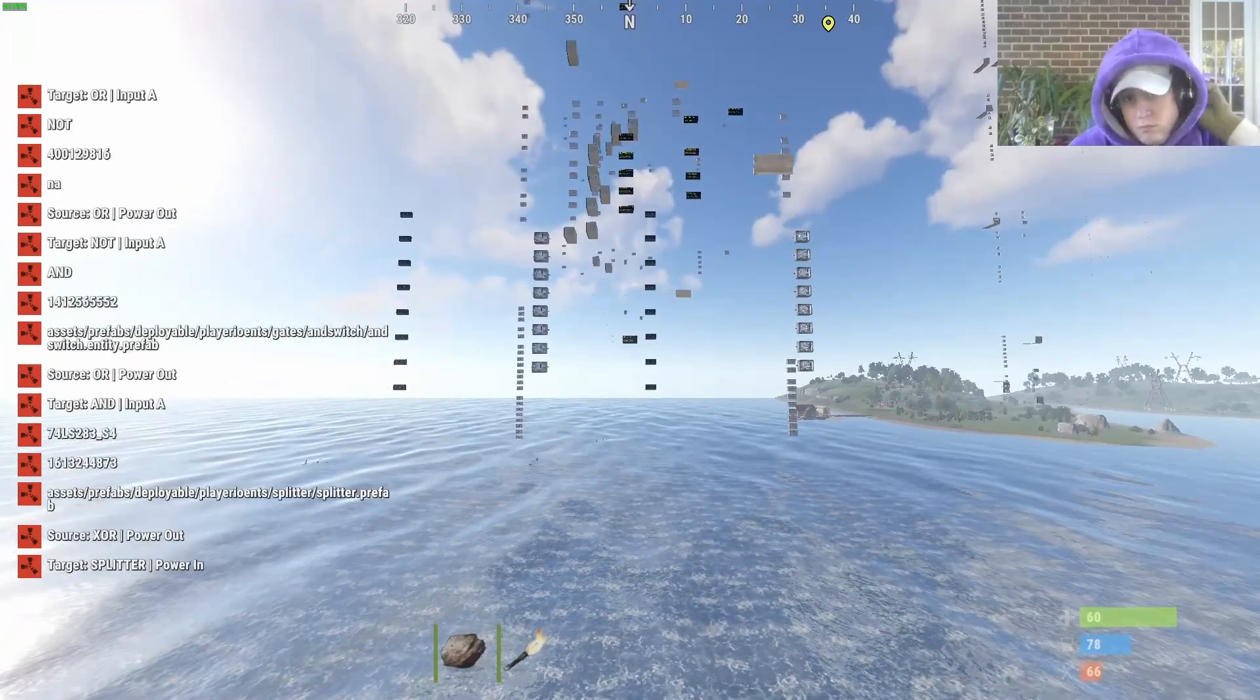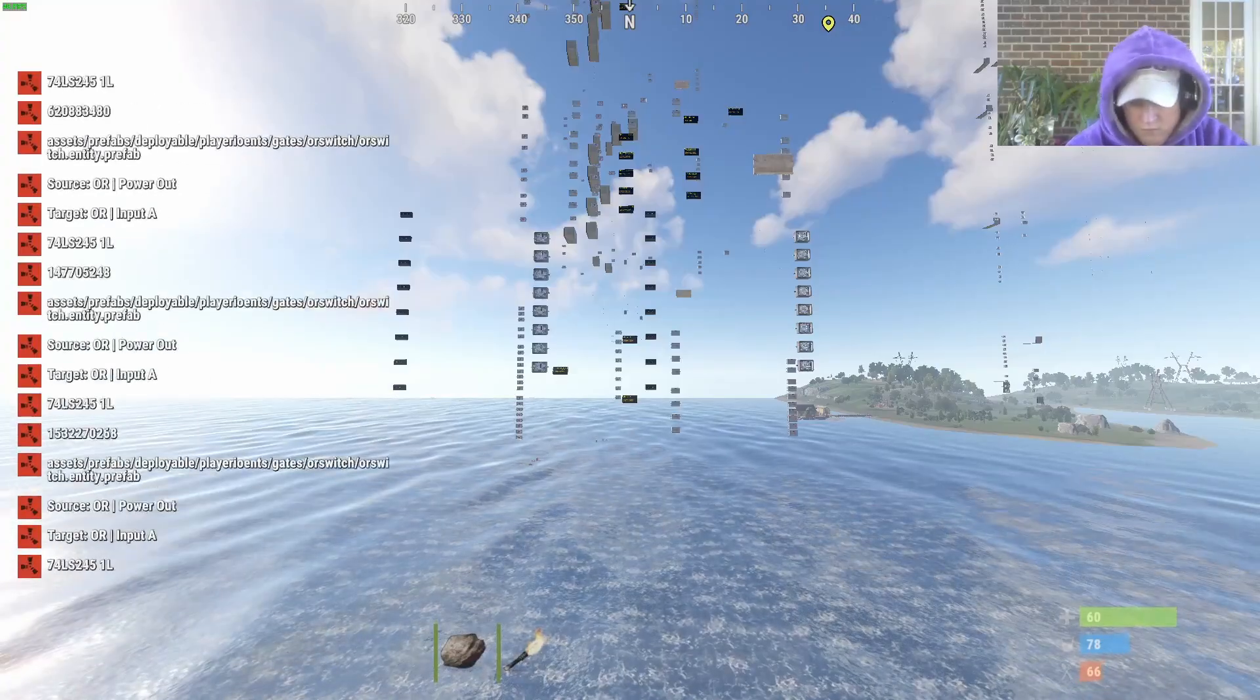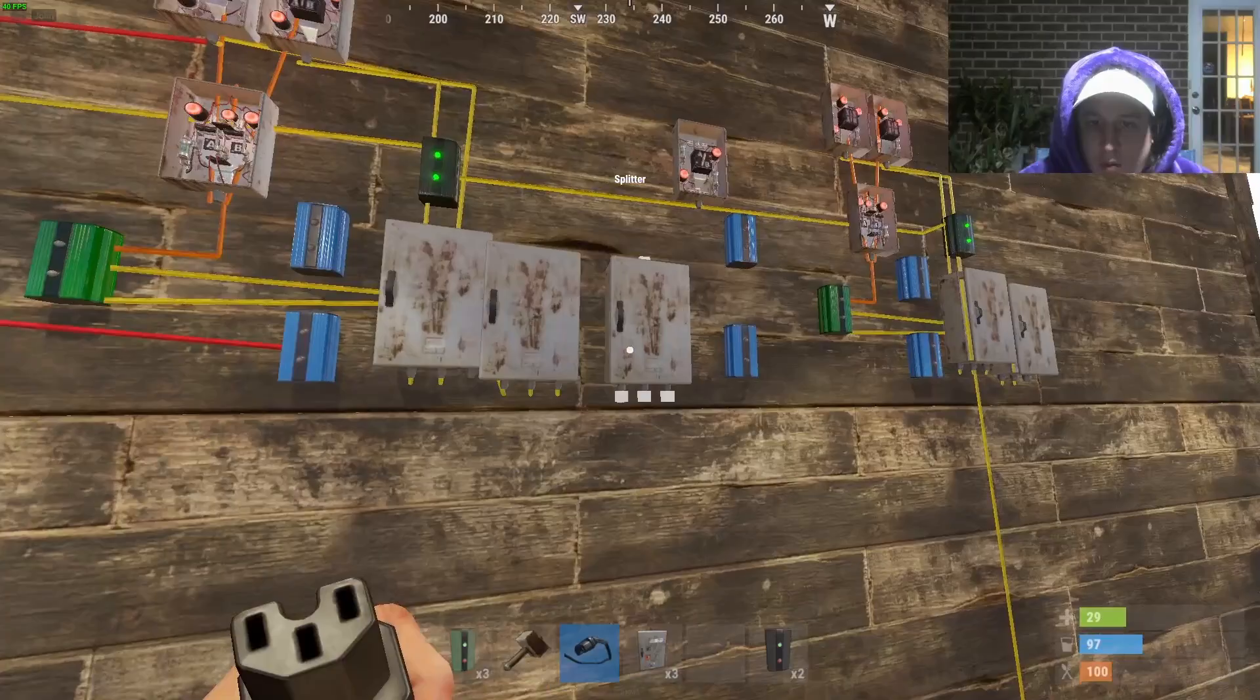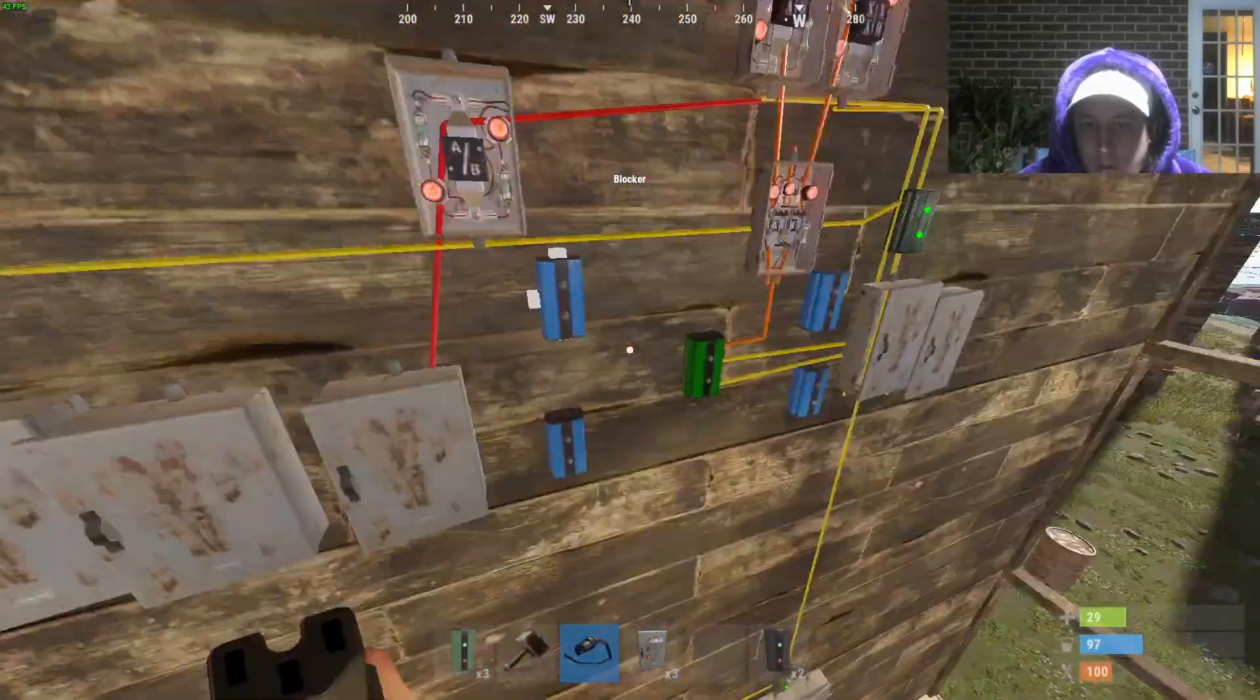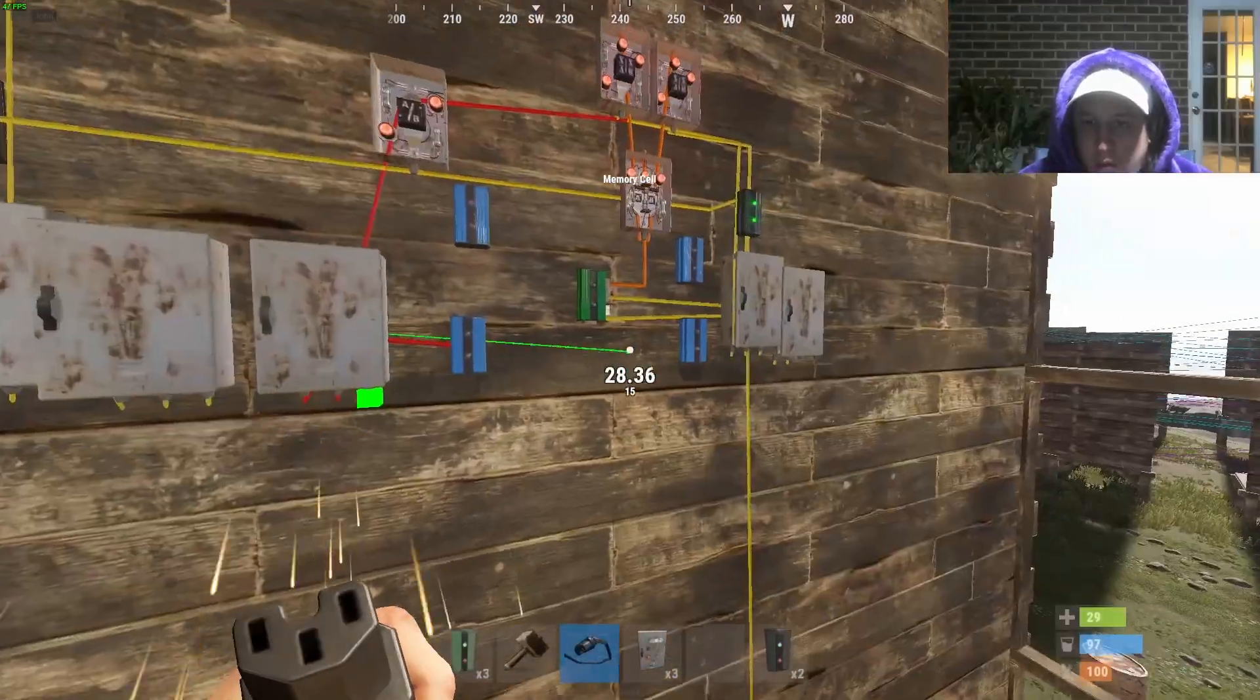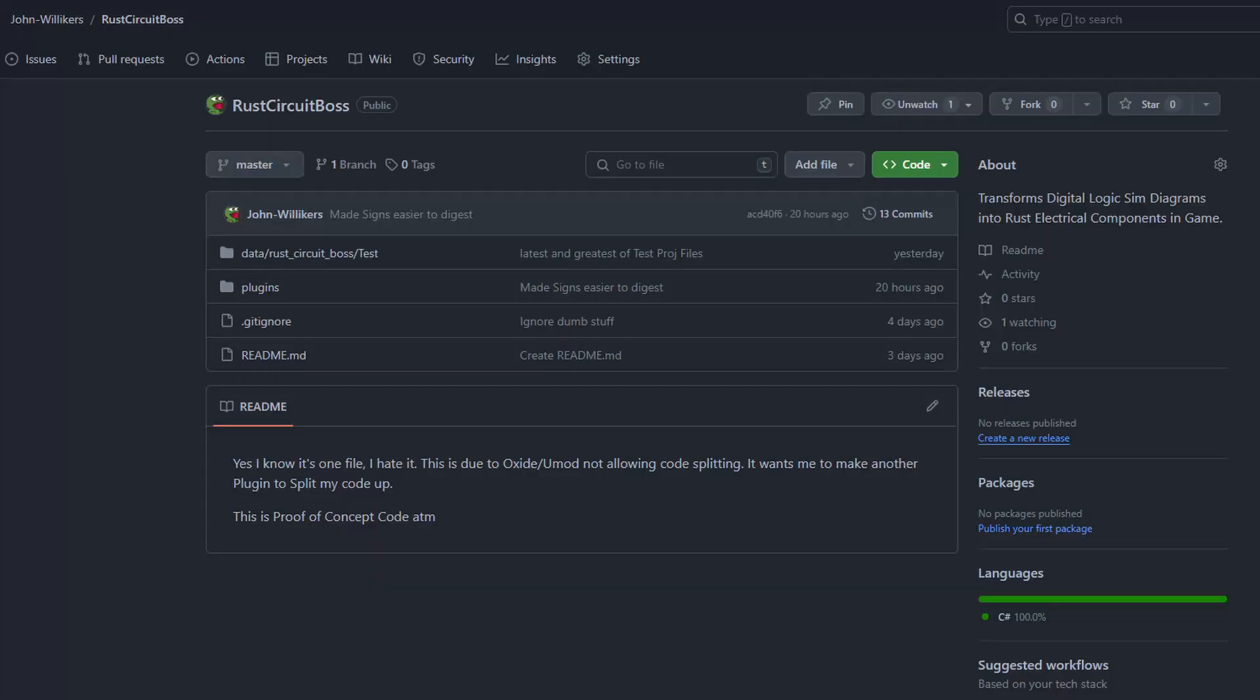Welcome back to the second installment of my devlog series where I will be building an 8-bit CPU in Rust. When we last left off, we were hand-building chips and using the plugin Copy-Paste to save our work. We ran into an issue where Copy-Paste would spawn bugged electrical components that could not have their state updated. This would lead to inconsistencies within our schematics.